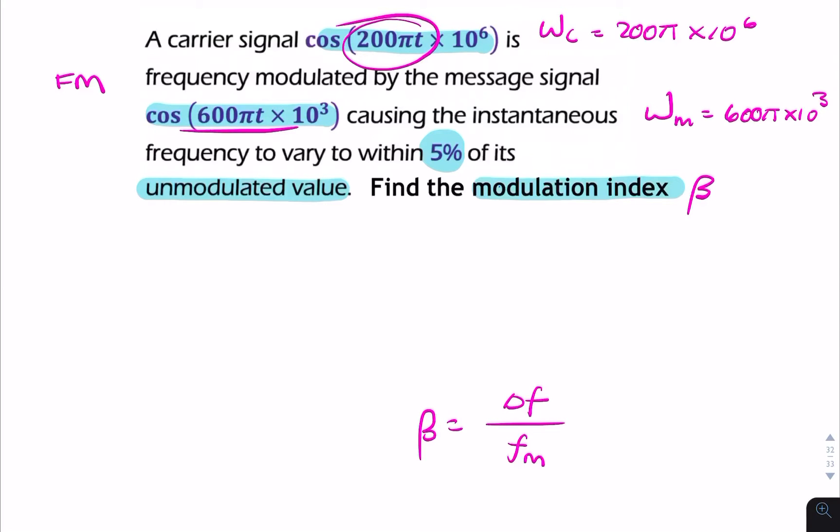So from that, we can find the carrier frequency, omega C over 2π, which is 100 times 10 to the power 6. And we can find Fm, omega M over 2π, which is 300 times 10 to the power 3.